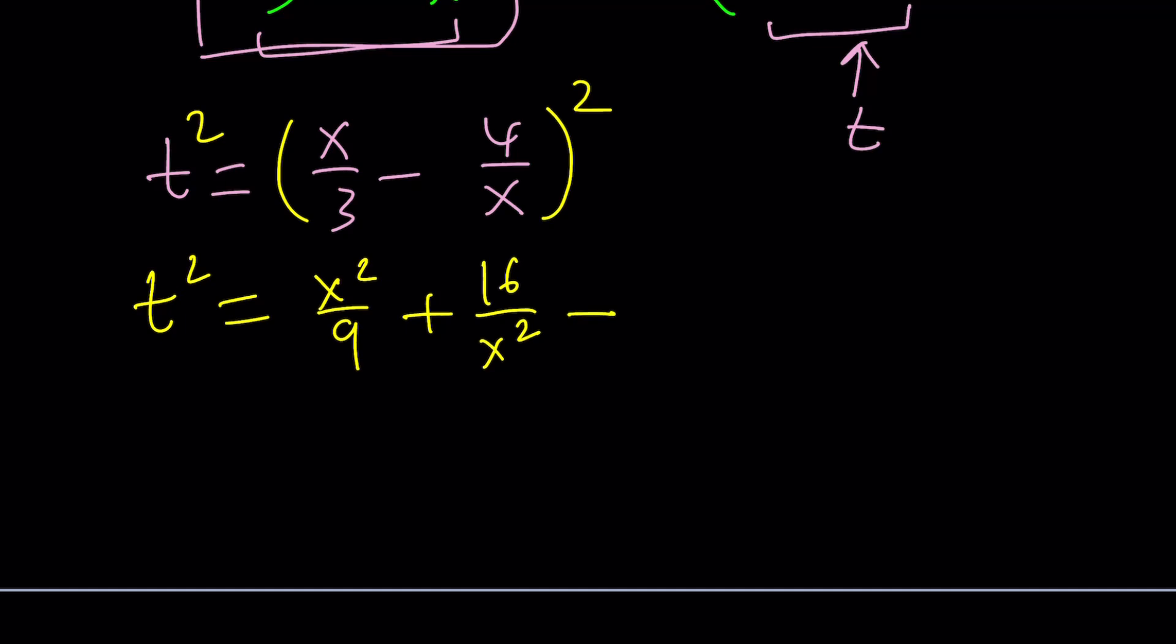And notice something nice about it, is that x's cancel out, and the constant term appears, which is nice. So, after I squared it, I did get something that looks like this, and that would be, what, 8 over 3?